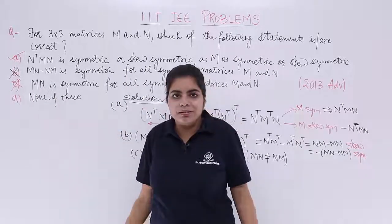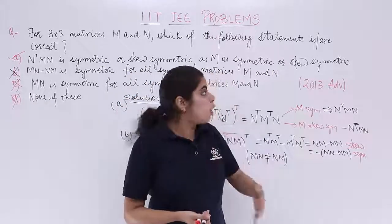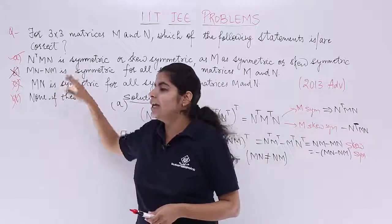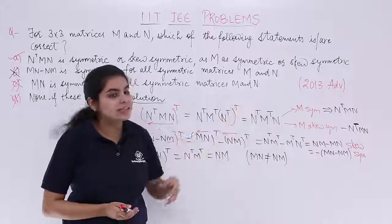D is what? D is none of these. You definitely not need to check it. So what is the answer for the options being is or are correct? The option number A goes the correct answer for the IIT JEE problem asked in the year 2013.